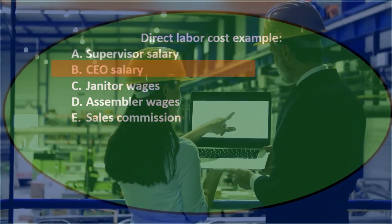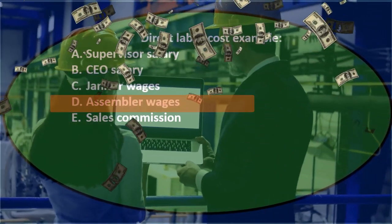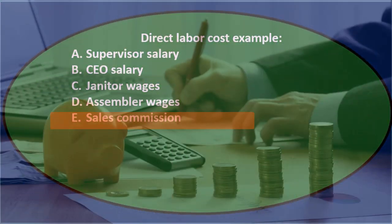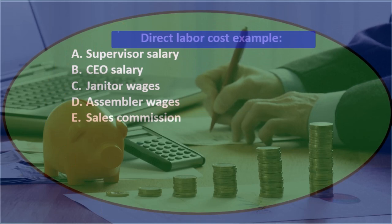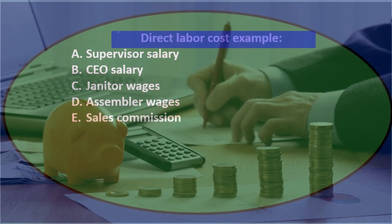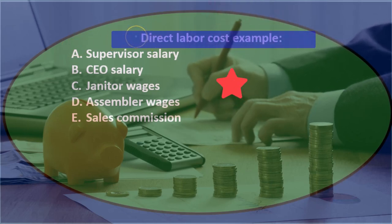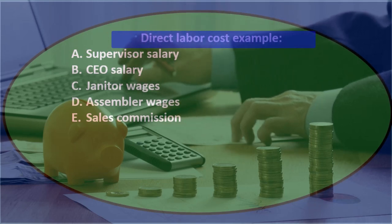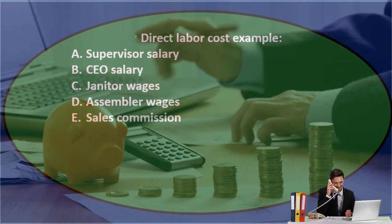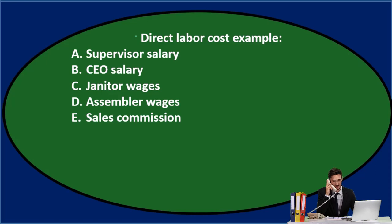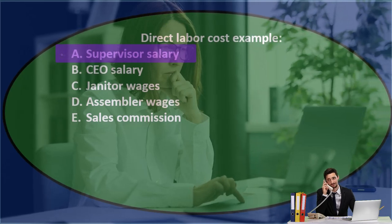Next question: direct labor cost example. Options: A) supervisor salary, B) CEO salary, C) janitor wages, D) assembler wages, E) sales commission. Let's go through this using the process of elimination. Direct labor is the type of labor we can apply directly to a specific job — labor that goes on the job cost sheet and directly into work-in-process.